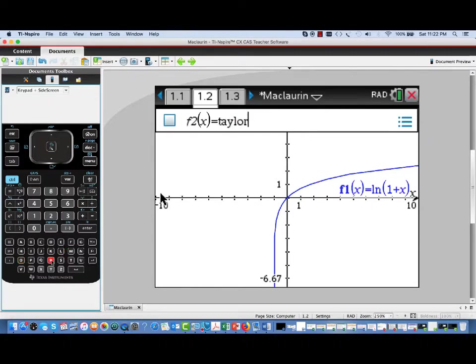So for f2 of x, I'm entering Taylor of, we'll use f1 of x as our function. And the variable in play is x. And for a degree, I'm going to enter a general parameter n. And then, the point around which we'll expand is 0.